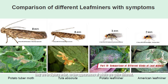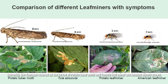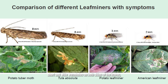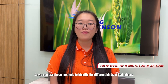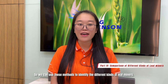Secondly, the damages caused by the larvae of Potato Tuber Moth and Tomato Leaf Miner form silver-brown, short, and wide mines on both sides of the leaves. While the damages caused by the larvae of Potato Leaf Miner and American Leaf Miner form gray-white, narrow, and long tunnels only on the front side of the leaves. So we can use this method to identify the different kinds of leaf miners.